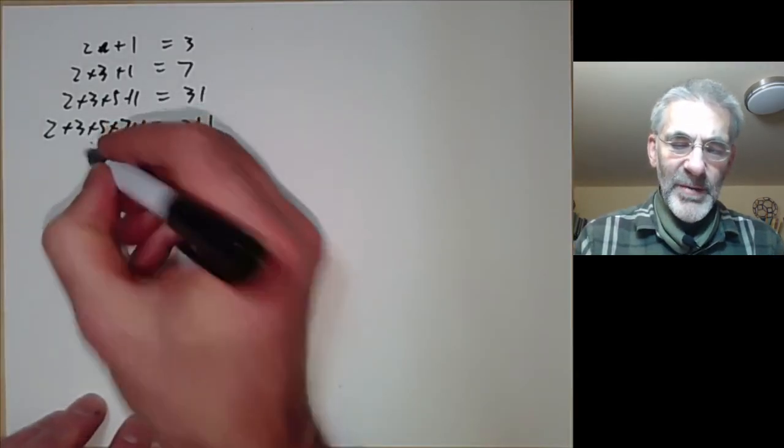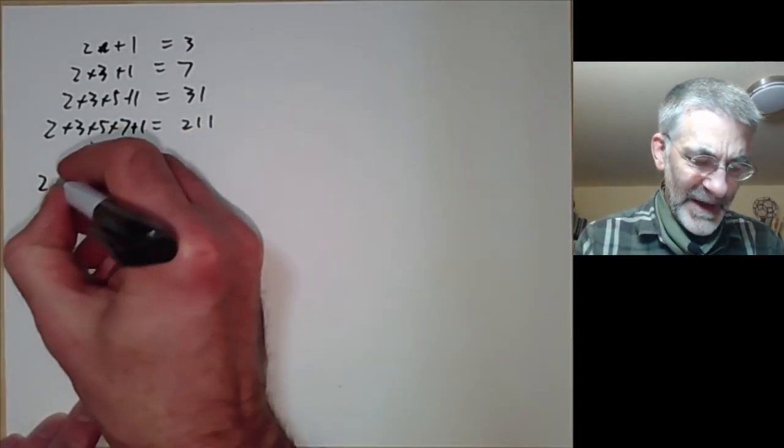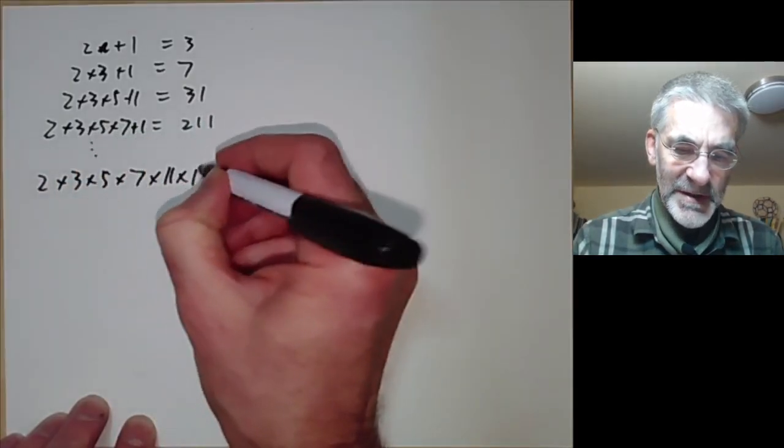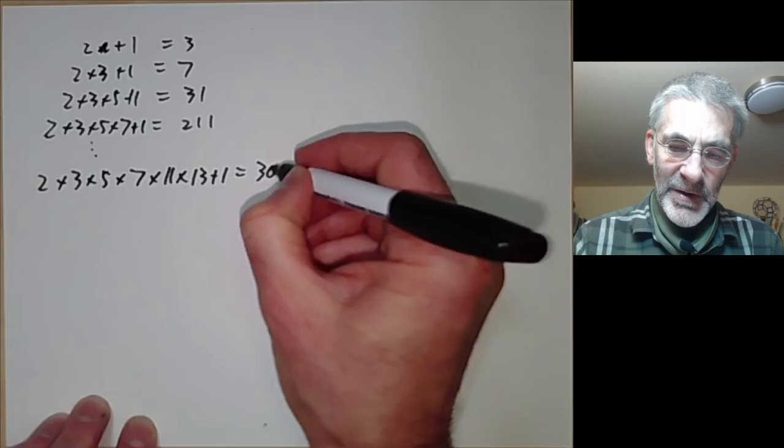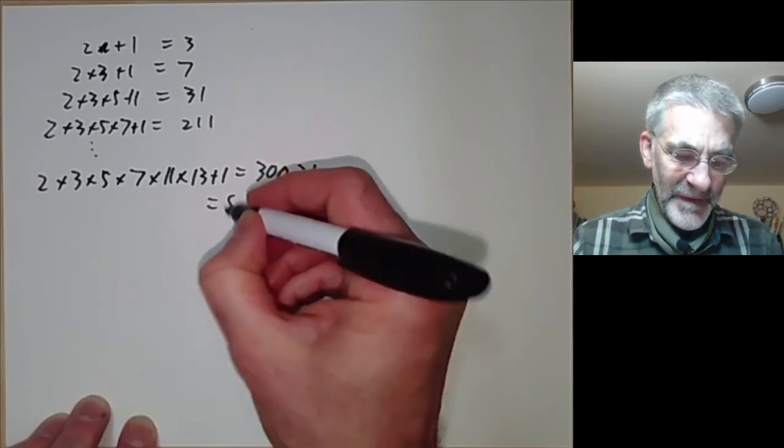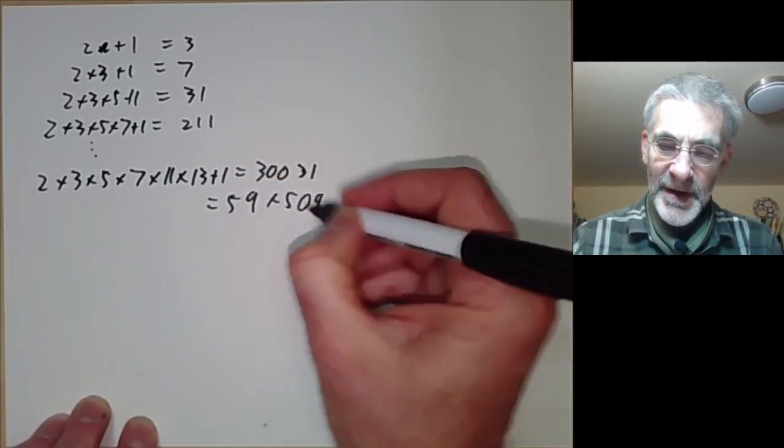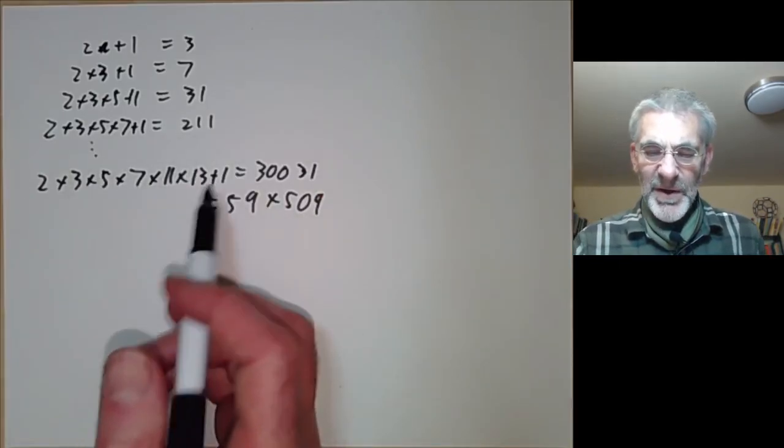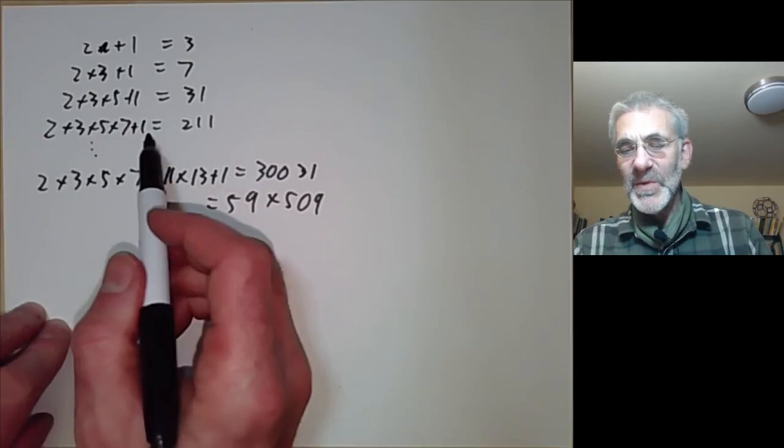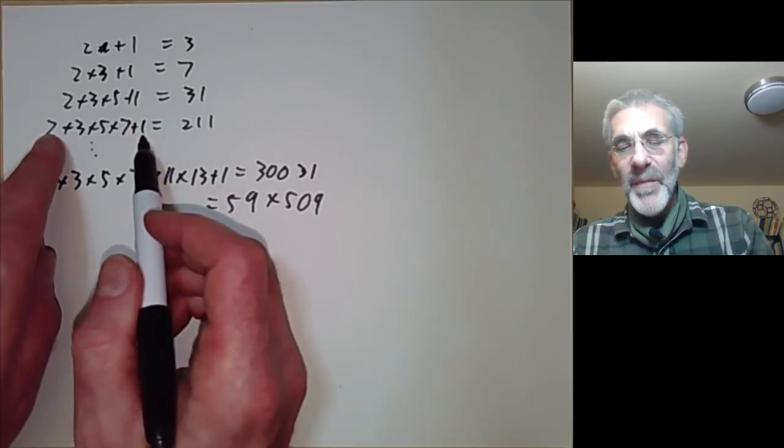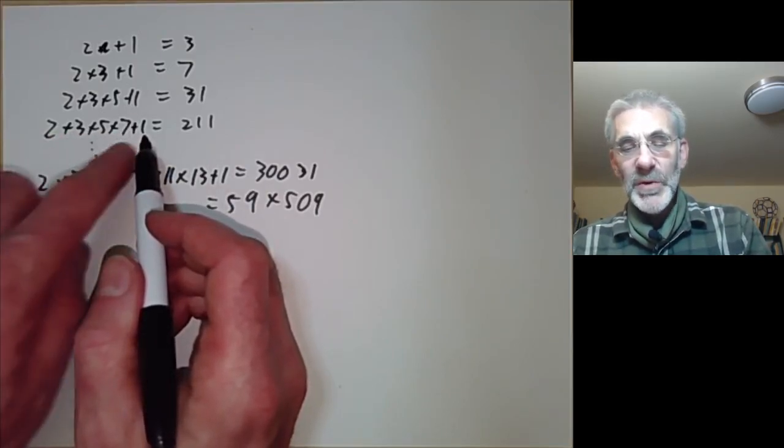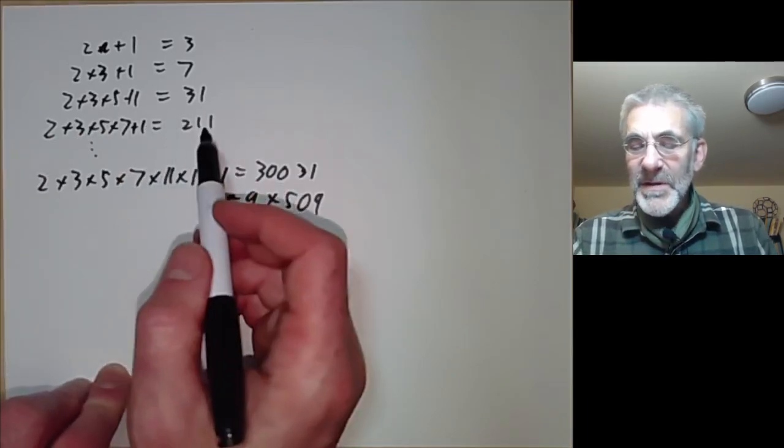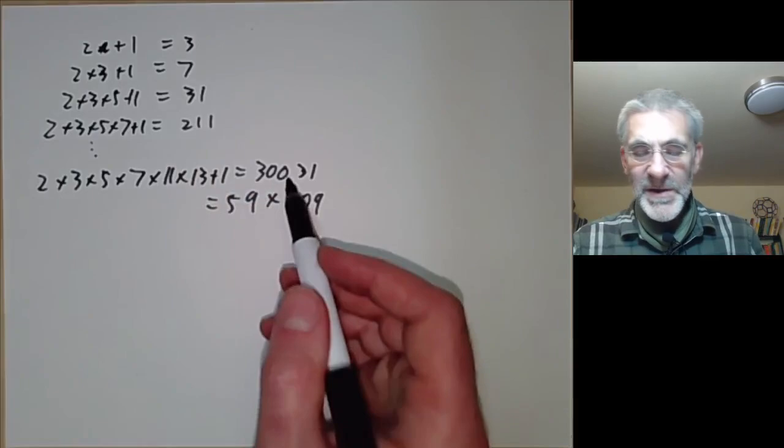Well if we go on a bit you discover that's not true. So 2 times 3 times 5 times 7 times 11 times 13 plus 1 is 30031 which is 59 times 509. So that doesn't actually work. You know it's quite plausible that this number is likely to be a prime because you've made it not divisible by a lot of small numbers so these numbers are certainly more likely than most numbers of about that size to be prime but as you see it fails.